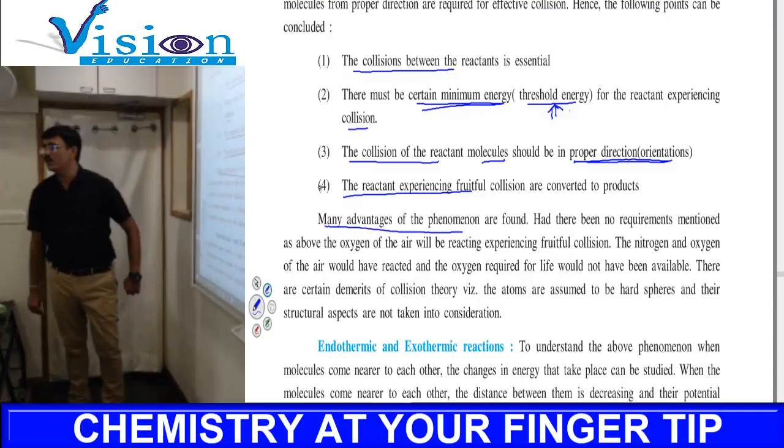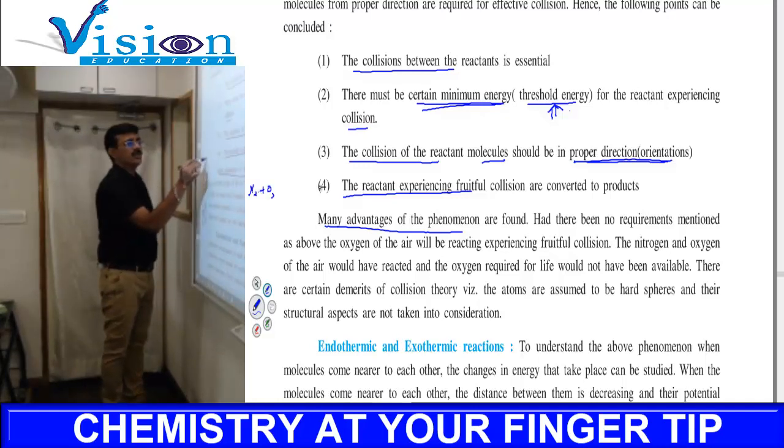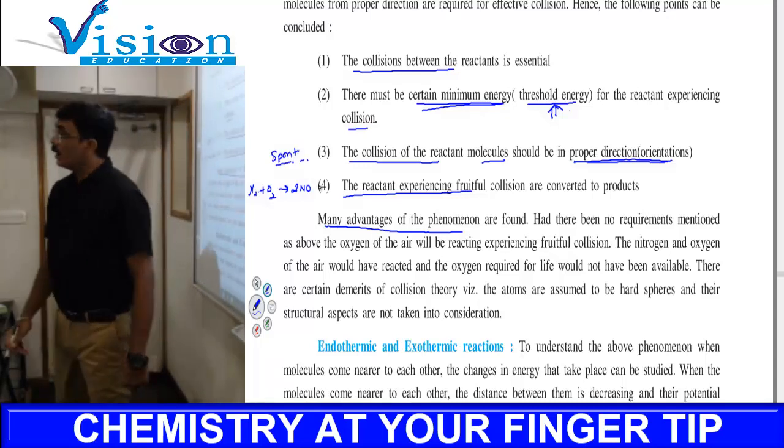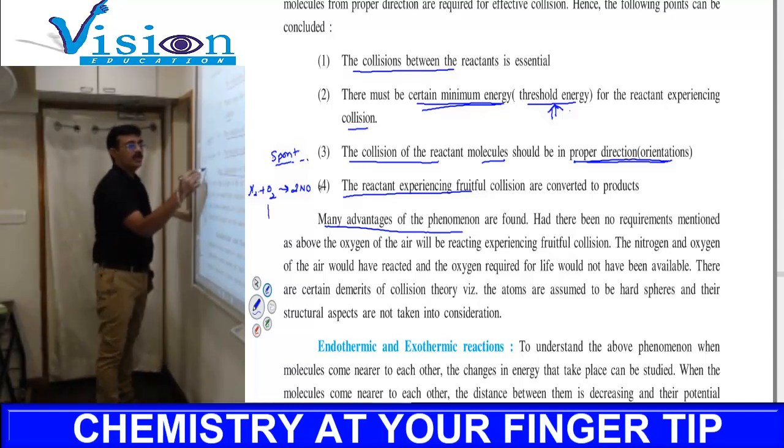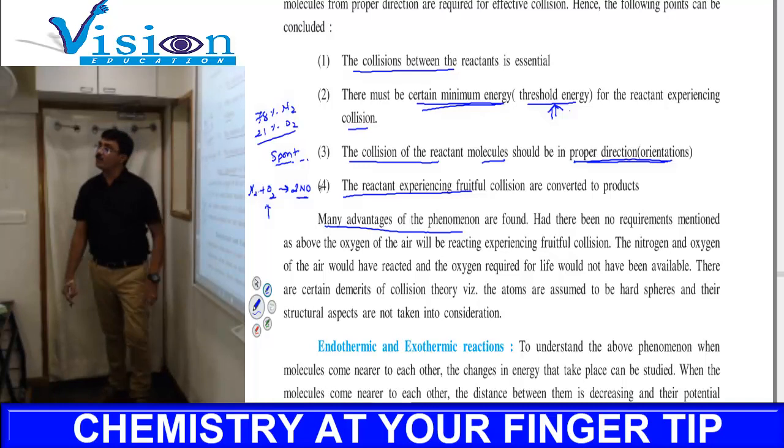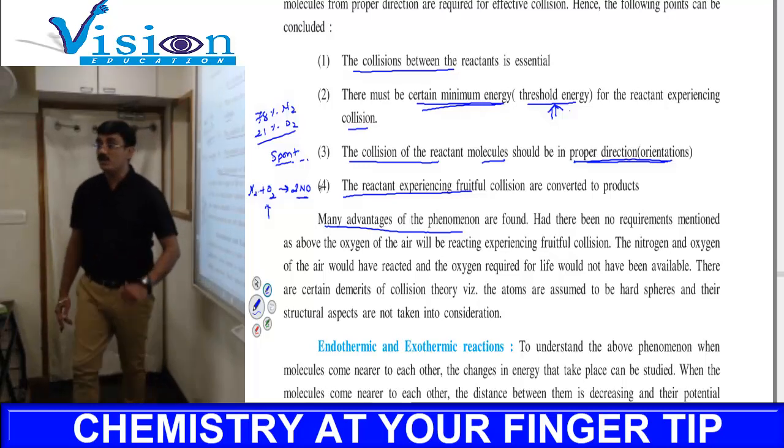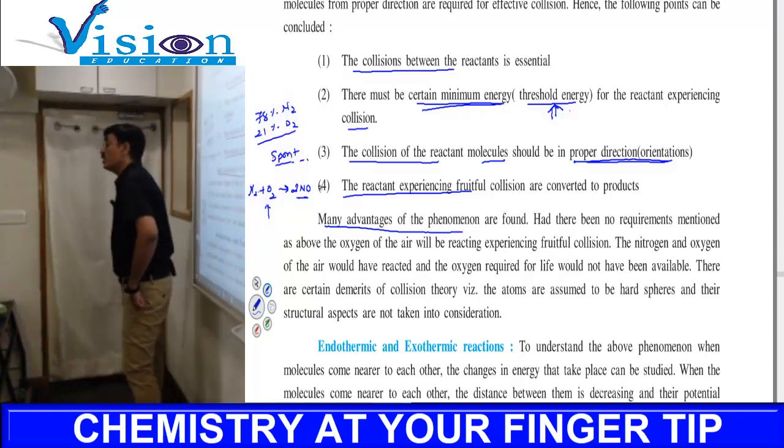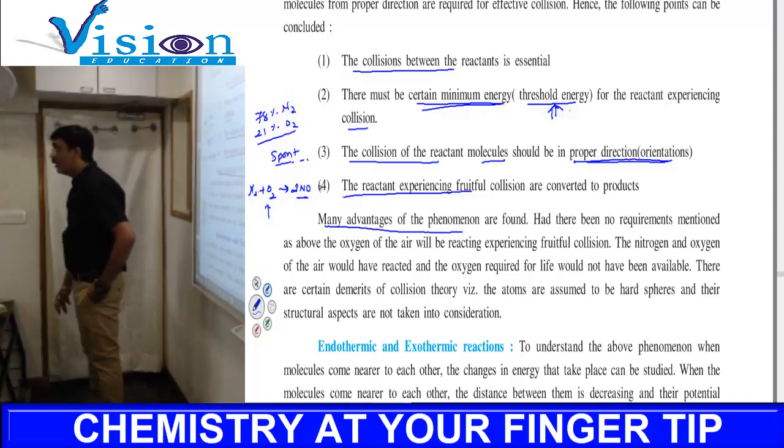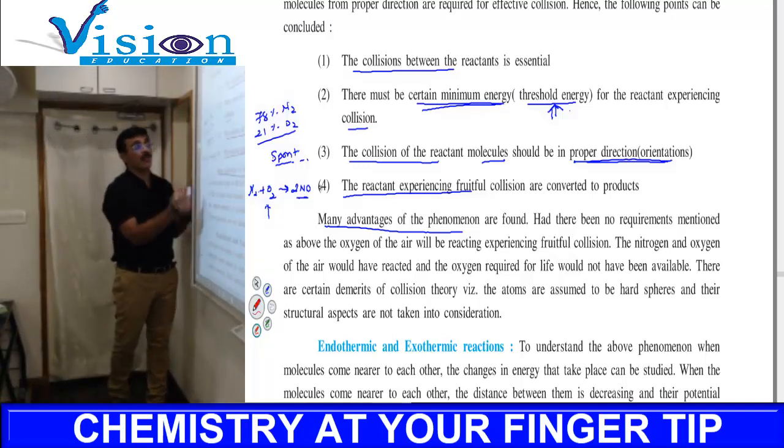We can conclude the theory of collision: First, collision has to be there for the reactants, then product is obtained. Second, there must be certain minimum energy—threshold energy or activation energy. There is a difference between threshold energy and activation energy, which is my next topic, but there has to be minimum required energy called threshold energy.